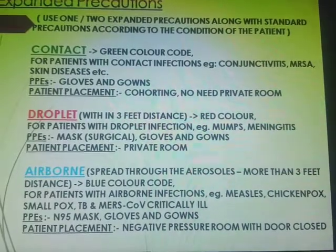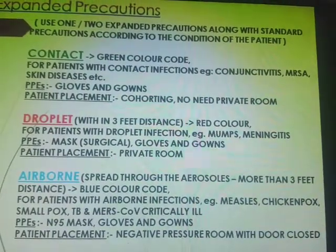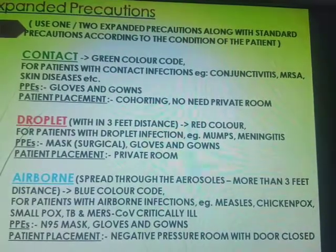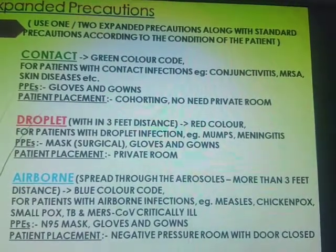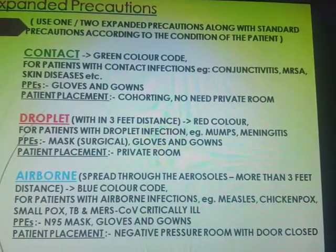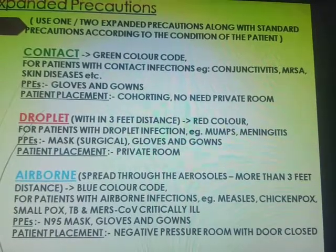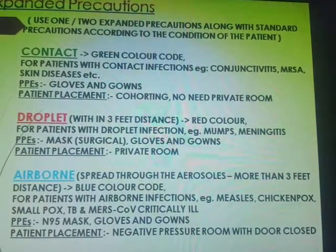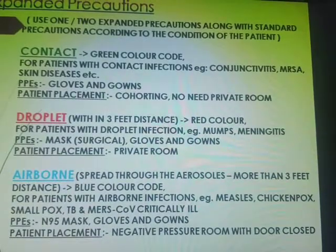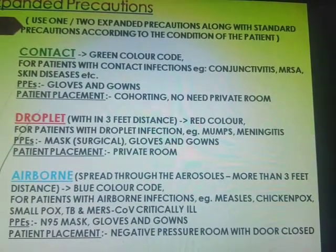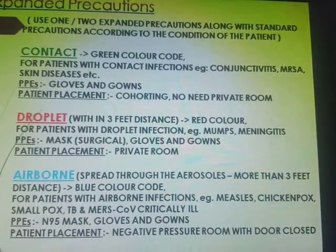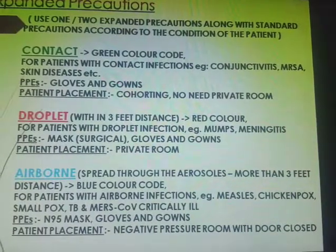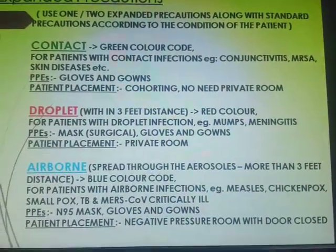Droplet precaution uses a red sign and applies to diseases like mumps, meningitis, and influenza. In these cases, you must wear a surgical mask, gloves, and gown when dealing with the patient. The patient must be in a private or single room — no negative pressure room is required.